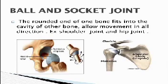Now we will discuss the ball and socket joint. The rounded end of one bone fits into the cavity of another bone, allowing movement in all directions. Ball and socket joints are present in our shoulder joint and hip joint.